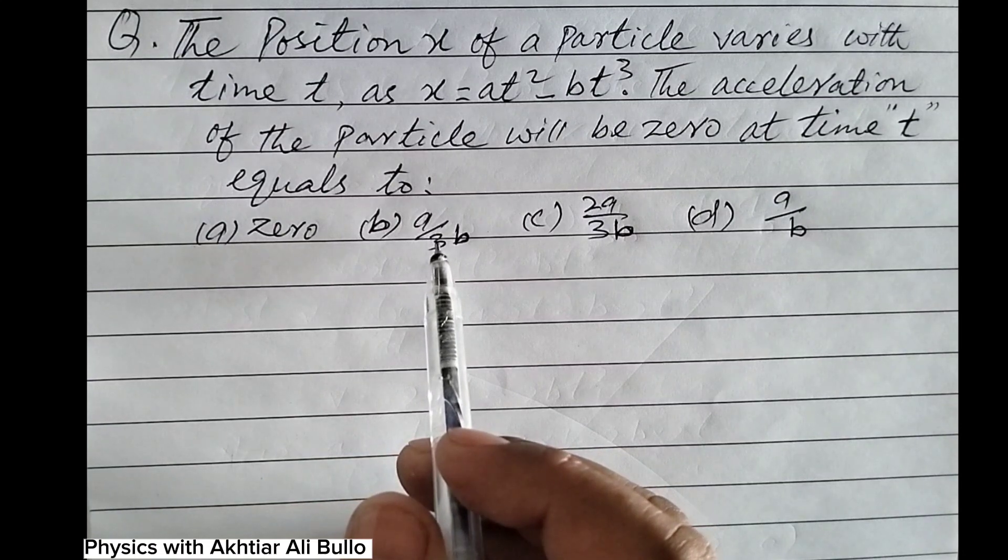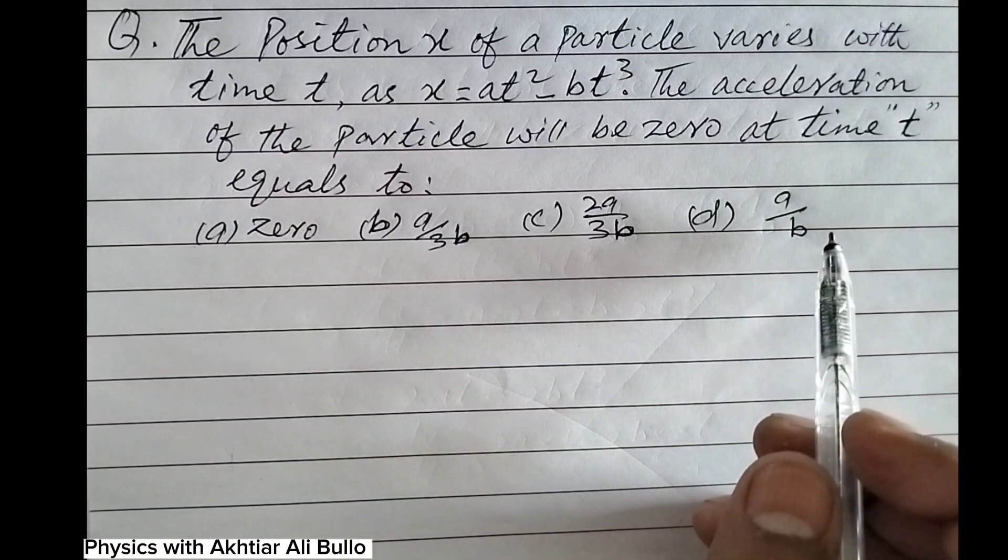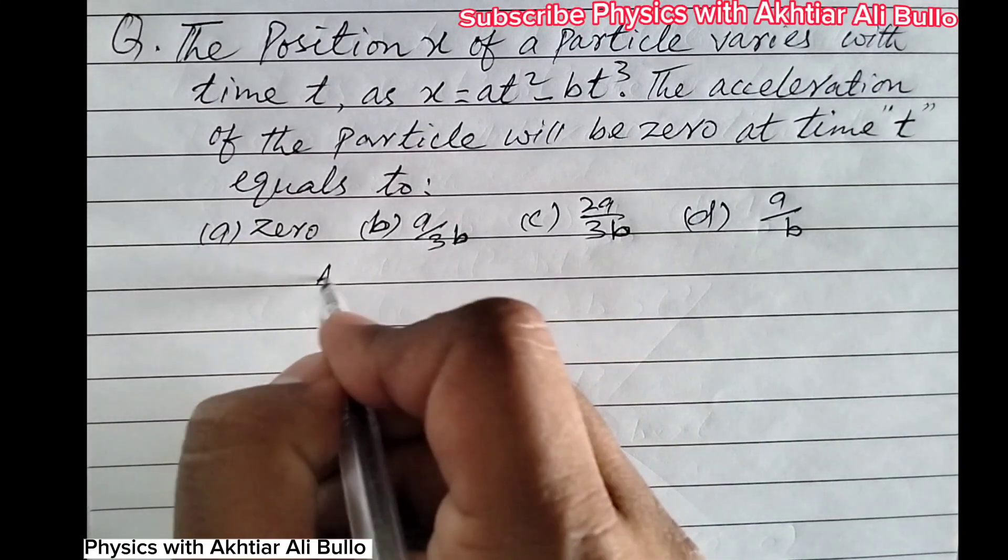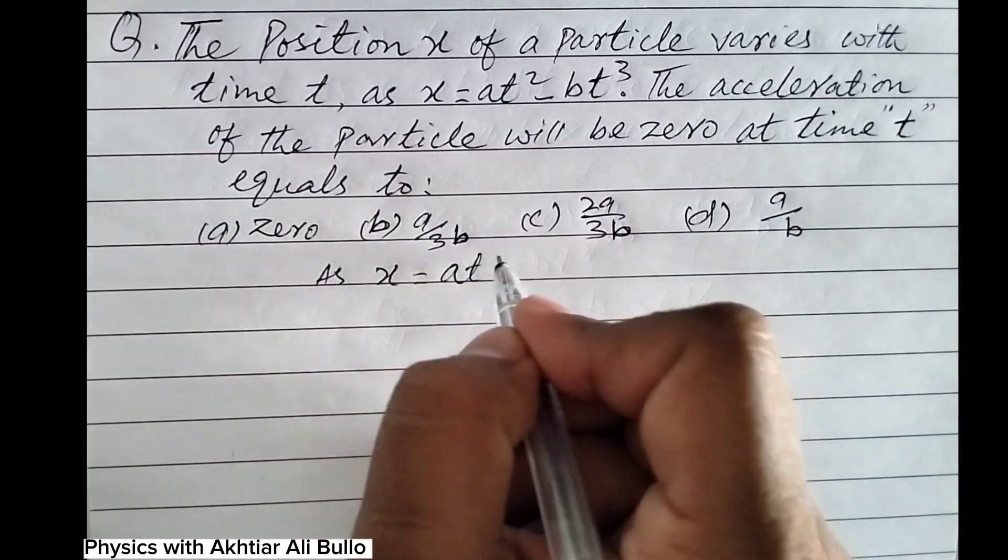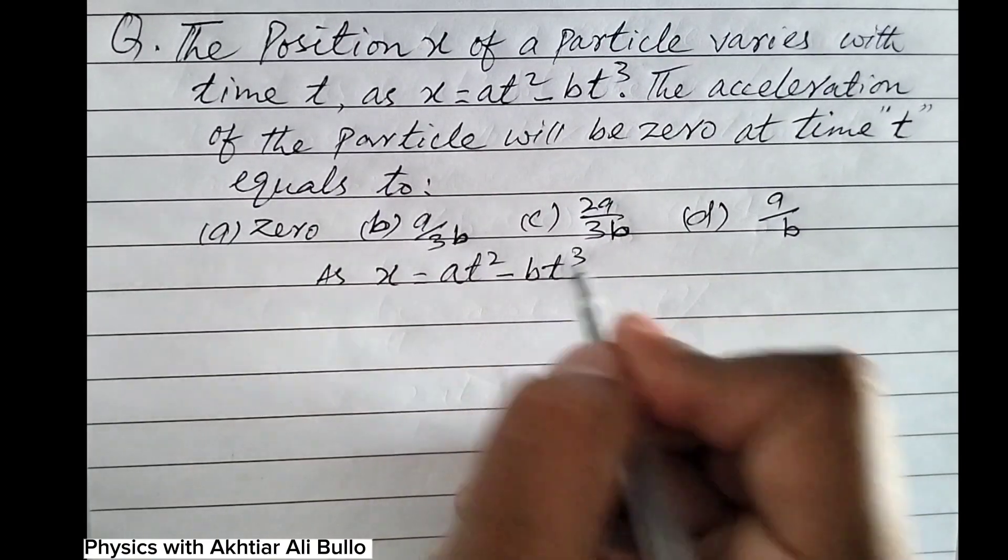Subscribe Physics with Akhtar Ali Bullo. So x is given as at² - bt³.